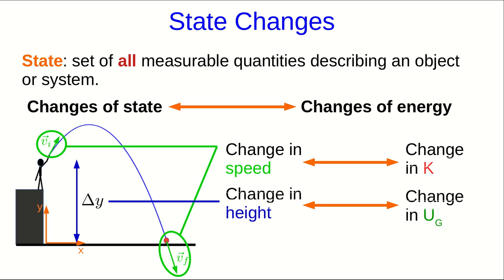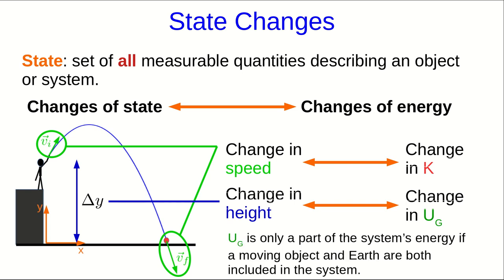Now notice something about that change in height. That's actually a relationship between two objects. It's effectively the distance between the ball and the earth. And so the gravitational potential energy is only part of the system's energy if we include both the ball and the earth in our system, which is a subtle but important point. If we don't include the earth, we're not saying that there isn't gravitational potential energy. What we're saying is that the gravitational potential energy isn't in the system. It's part of the environment's energy.